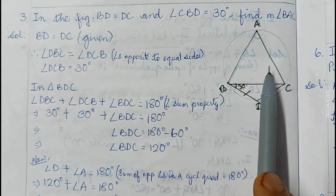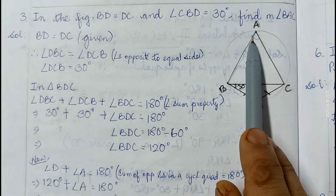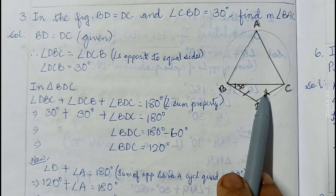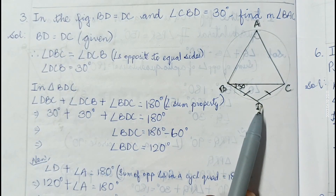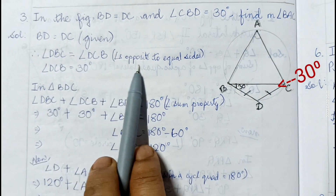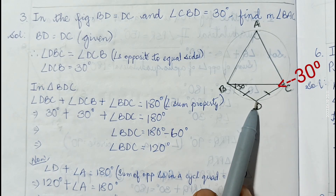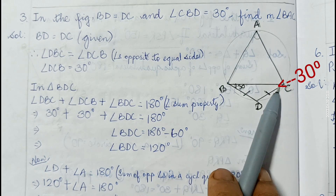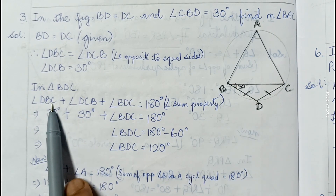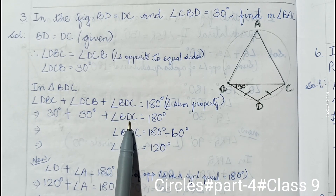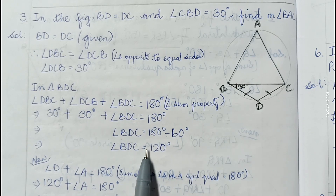Question number three: BD equals DC and angle CBD is 30 degrees; find angle BAC. Since BD equals DC, the opposite angles are equal, so angle DBC and angle DCB are both equal to 30 degrees. In triangle BDC, angle DBC plus angle DCB plus angle BDC equals 180 degrees, so 30 plus 30 plus angle BDC equals 180, therefore angle BDC equals 120 degrees.